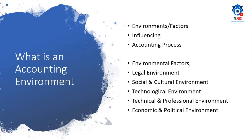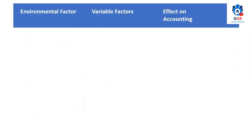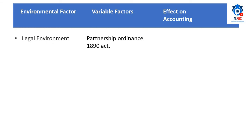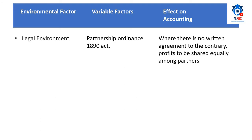Legal environment is the necessity to observe the law relating to accounting in the accounting process. A variable factor we would be looking into is the Partnership Ordinance Act 1890, and how this affects accounting: where there is no written agreement to the contrary, profits are to be shared equally among partners according to the Partnership Ordinance Act 1890.